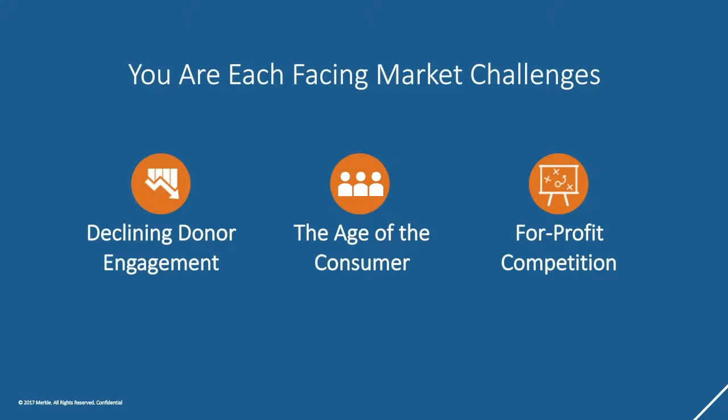Everyone is faced with lots of challenges in the fundraising market. Here are three things we think of as part of the case for focusing on affinity as a solution. The first is declining donor engagement — acquisition and retention rates have been falling over time. The universe of donor-aged people is increasing, yet the pool of qualified prospects is declining, and competition for them has intensified. Most nonprofits are in this perpetual state of acquisition, really trying to manage the leaky bucket.